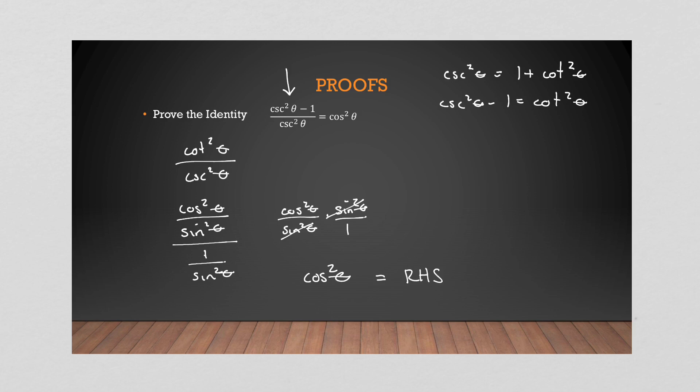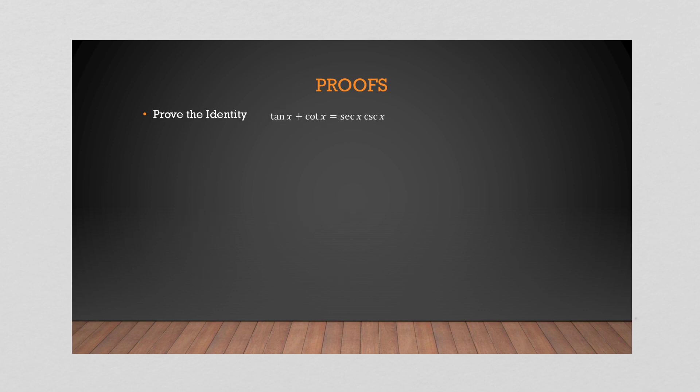That equals my right-hand side, so I have proved that identity. I only manipulated the left-hand side of the equation and achieved the right-hand side — that is a trig proof. Let's look at another one.